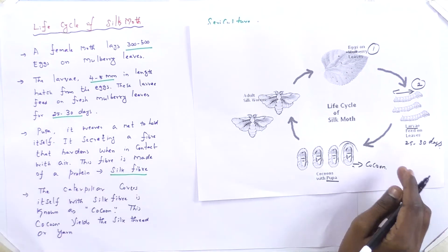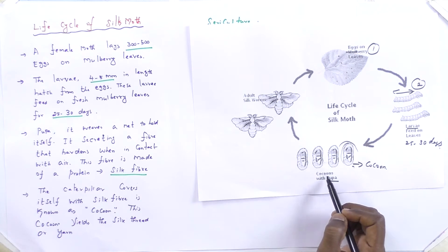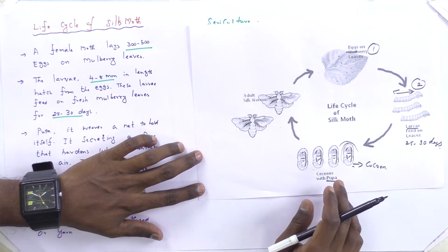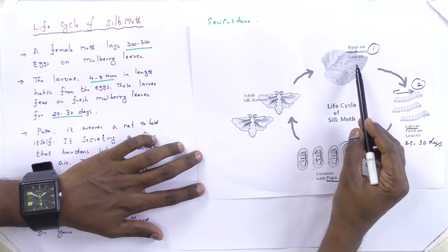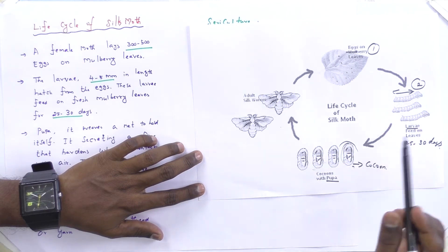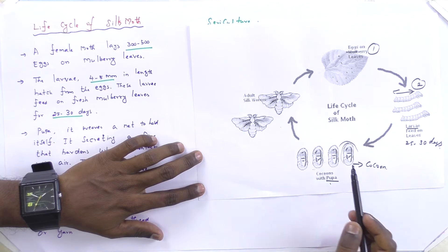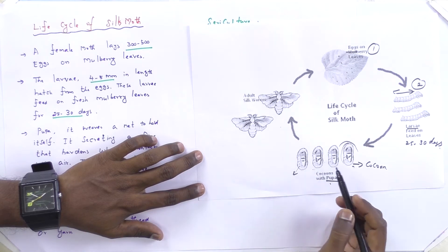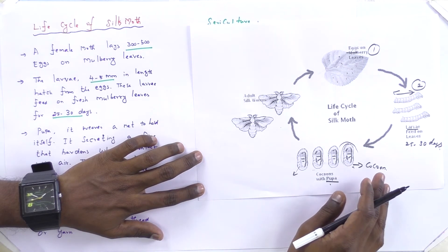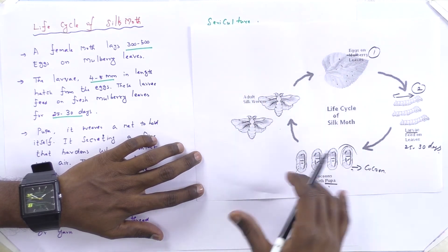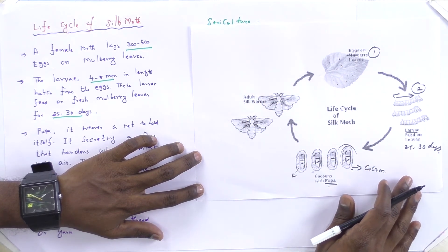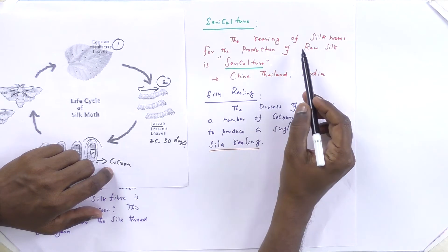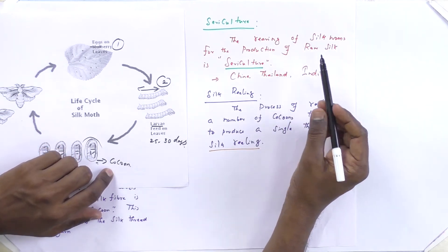The cocoon yields silk fiber or silk filament yarn. This completes the life cycle of silk fiber production: egg stage, larva stage, pupa stage, and adult silk moth. From the cocoons we can obtain silk filament yarn. This overall process is known as sericulture — the rearing of silk moths for the production of raw silk.